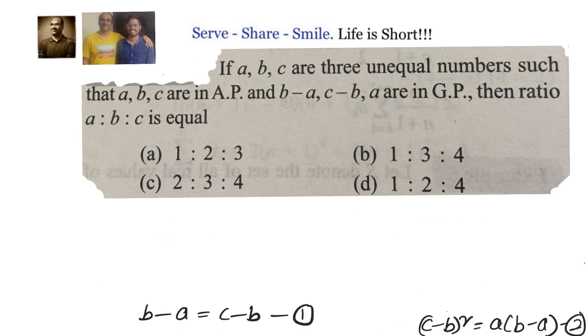From equations one and two, we can clearly see that C minus B whole square can be replaced by B minus A whole square, because B minus A equals C minus B.